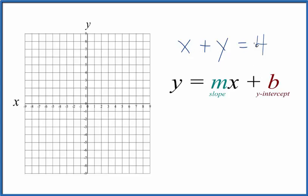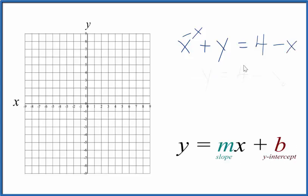We have x plus y equals 4, which isn't in slope-intercept form. We need to rearrange it. Let's subtract x from both sides, and we end up with y equals 4 minus x.